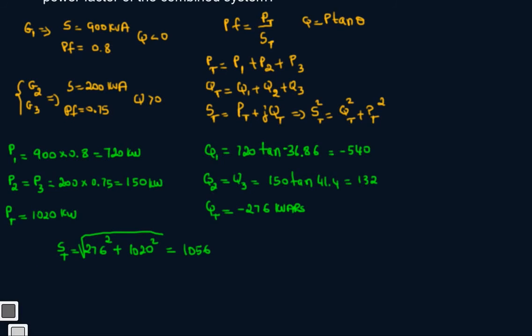Now that I have total P and total S, I can calculate my power factor. This is the final step. Power factor now equals 1020 total real power over the total apparent power 1056, and I have 0.96, that's what I got.